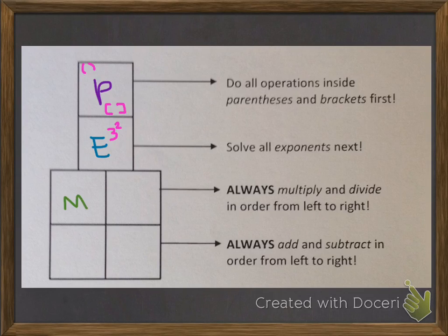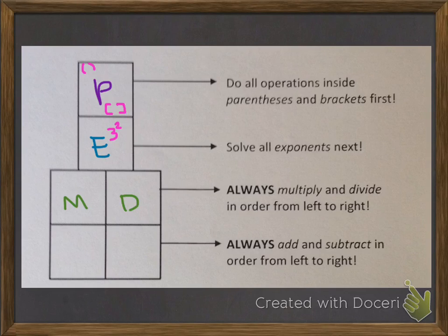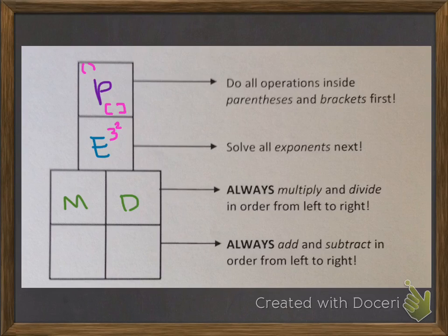Next come multiplication and division, and we're actually going to be looking for those two things at the same time. They're almost like Twinkies — they come in a package together, and whichever one you see first is the one you solve first, from left to right. So we're always multiplying and dividing in order from left to right, and of course you can draw the symbols to help remember what you're looking for.